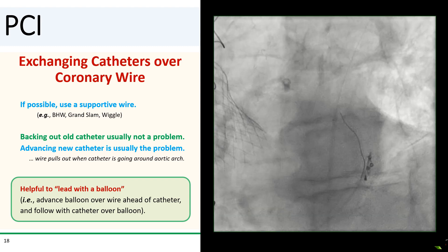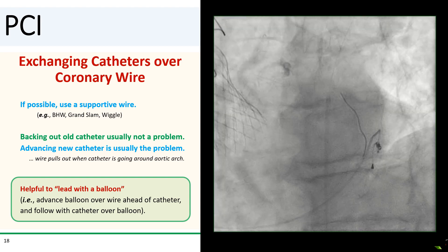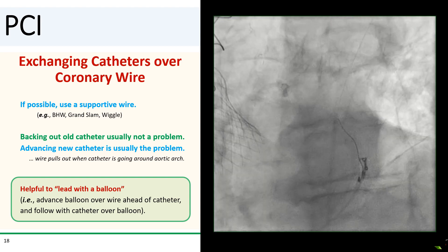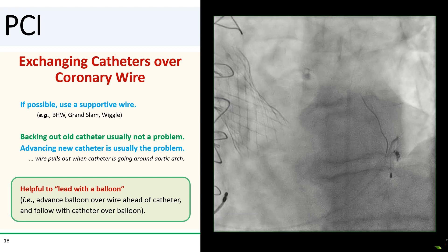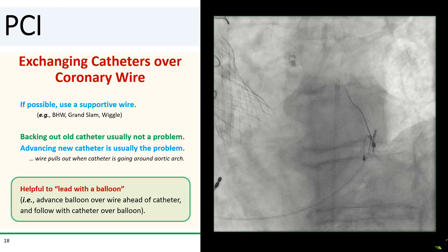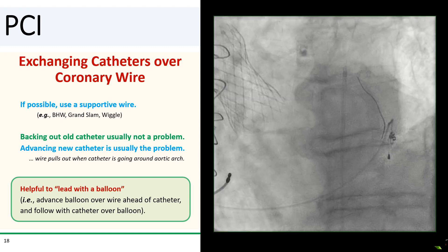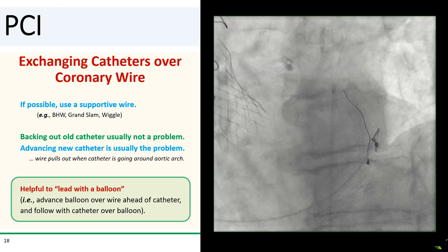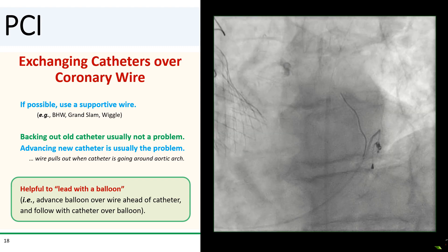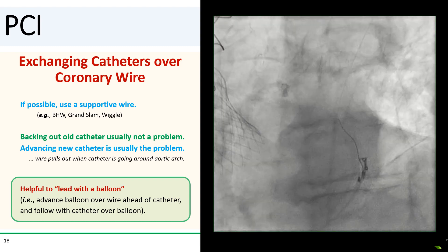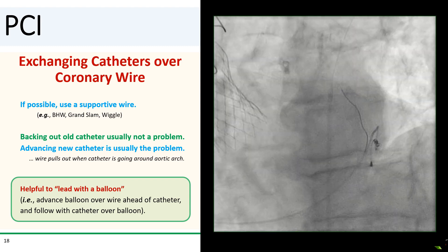In my experience, backing out the old catheter over your coronary wire is generally not a problem. Where you run into problems is when you try to advance the new catheter back in over your coronary wire. As the new catheter goes around the aortic arch, the coronary wire is usually not stiff enough to keep the catheter straight. The tip of the catheter will tend to want to reform its shape, and once it does, it ends up pulling your coronary wire out of the coronary.